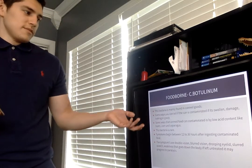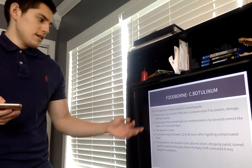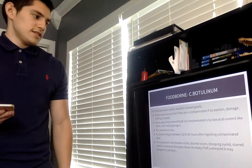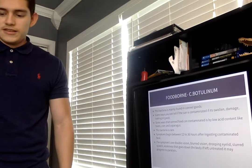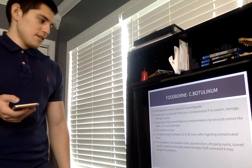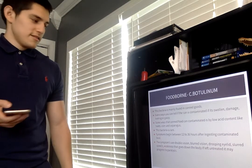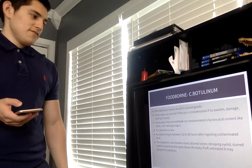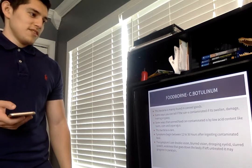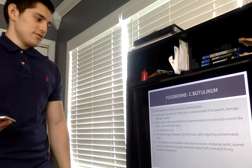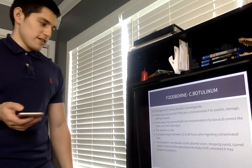Foodborne botulinum. This bacteria is mainly found in canned foods. Some ways you can tell the can is contaminated if it is swollen, damaged, or gassy, or maybe if it is leaking. Some ways that canned food can contaminate is by low acid content like beets, corn, asparagus.